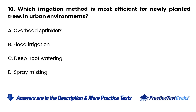Question 10. Which irrigation method is most efficient for newly planted trees in urban environments? A. Overhead sprinklers. B. Flood irrigation. C. Deep root watering. D. Spray misting.